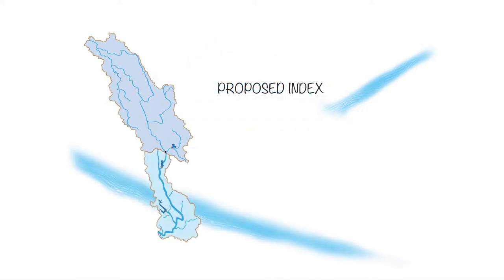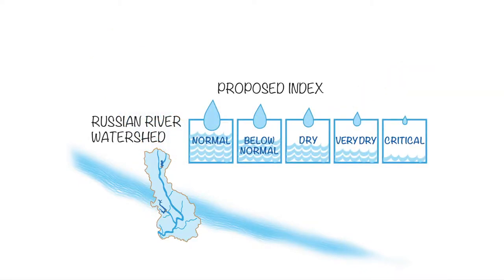Proposed changes to the index and its associated minimum in-stream flow requirements would allow for management of minimum in-stream flows based on Russian River watershed hydrology rather than conditions in Lake Pillsbury and the Eel River watershed.